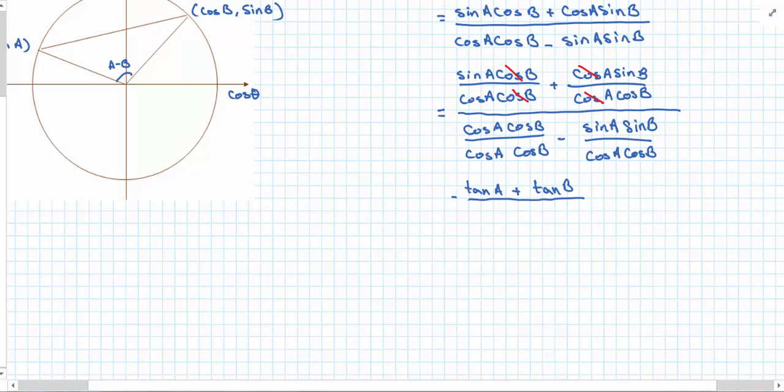Now, let's look at the denominator. Cos A cos B over cos A cos B, well, they cancel, resulting in 1. And I have sine A over cos A and sine B over cos B, so that would be tan A and tan B. So that's 1 minus tan A tan B.